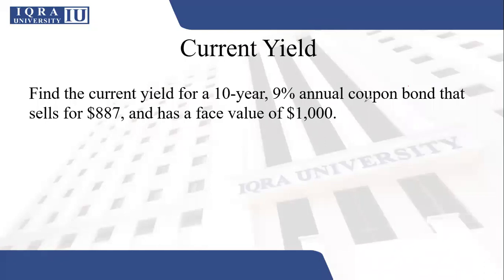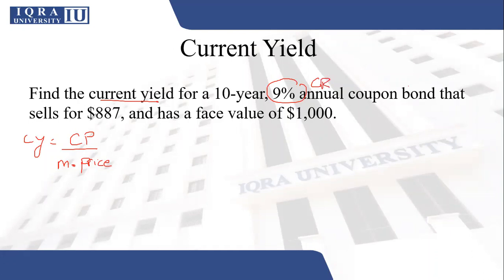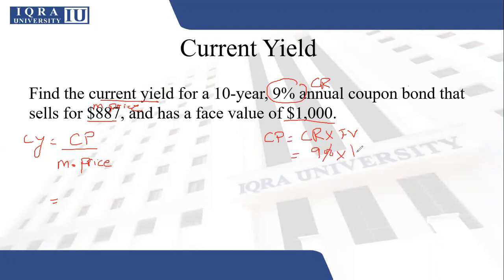Practice question: Find the current yield for a 10-year, 9% annual coupon bond that sells for 887 and has a face value of 1000. The current yield formula is coupon payment divided by market price. First, calculate the coupon payment: coupon rate of 9% multiplied by face value of 1000 gives a coupon payment of 90.